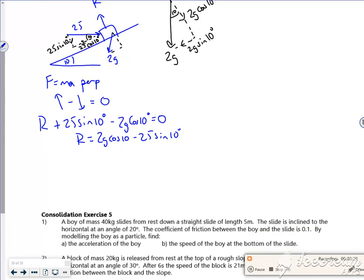So I can rearrange that as r is 2g cos 10 minus 25 sin 10. And I can now use that to work out f max. So f max mu r. Mu is 0.3. So f max is 3 over 10, 2g cos 10 minus 25 sin 10. If you can read the board because it's been a bit silly.